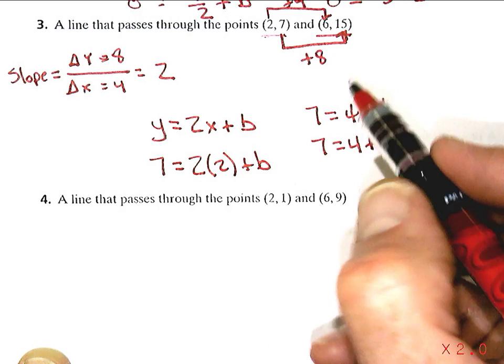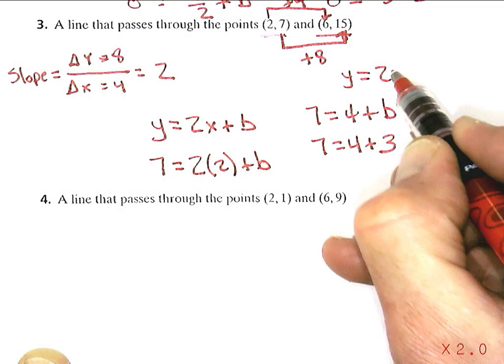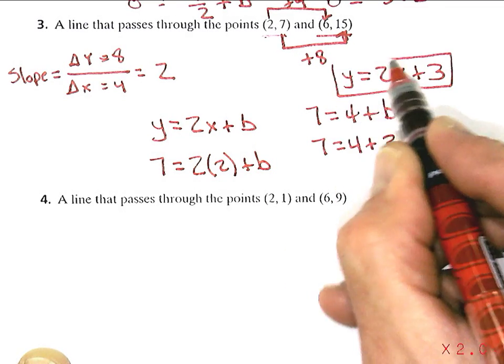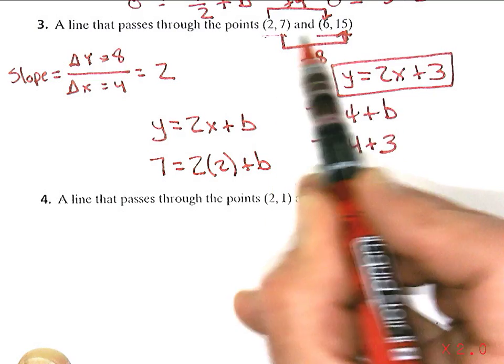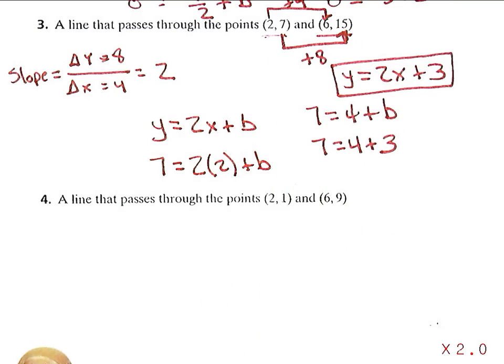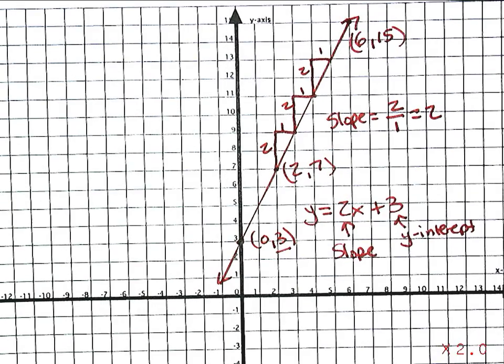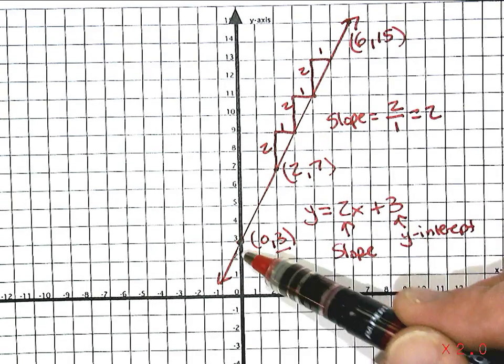And so now I can finish the equation that I started: y equals 2x plus 3. So that was what I wanted. And I found it just by using the two points or by putting the two points on the graph and finding the slope and the y-intercept.